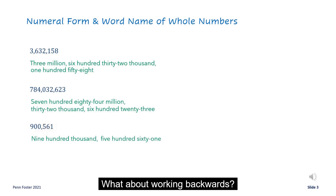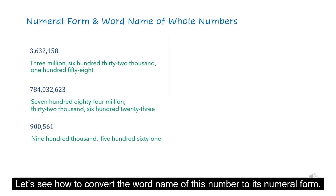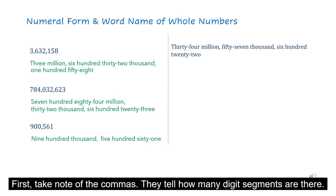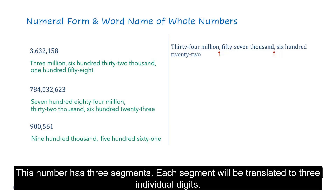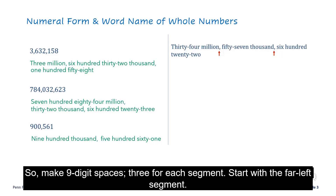What about working backwards? Let's see how to convert the word name of a number to its numeral form. First, take note of the commas — they tell how many digit segments there are. This number has three segments, and each segment will be translated to three individual digits. So, make nine digit spaces.